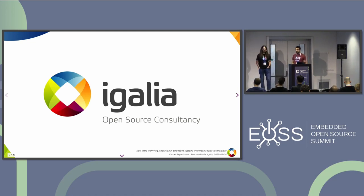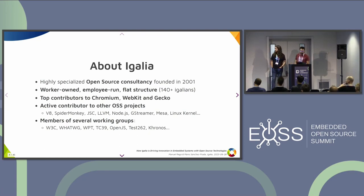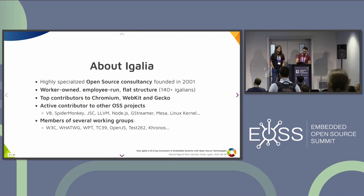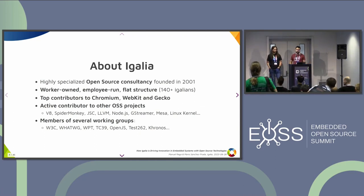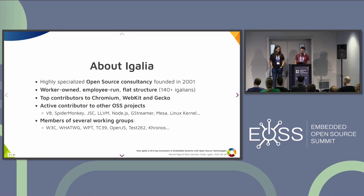About Igalia: we are an open source consultancy that is highly specialized. We have people around the globe and have been founded more than 20 years ago, so we've been doing open source work for quite a while. We have a cooperative-like company structure with a flat hierarchy. One important thing is that we are the top contributors to Chromium, WebKit, and Gecko outside of the companies maintaining those projects. We are also very active in several open source projects like JavaScript engines, LLVM, GStreamer, and many others, and are members of different standards groups across many areas of the stack.